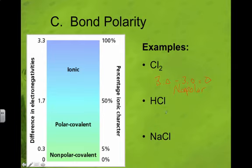So we know chlorine right here is 3.0. Let's just go ahead and go back and look at that value for hydrogen.